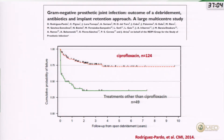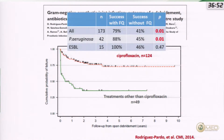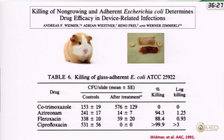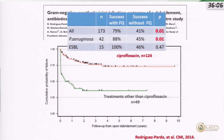When ciprofloxacin could not be used, prognosis fell to around 40 percent — a dramatic difference. Quinolones are very important in bone and joint infection caused by gram-negative bacilli. This applies not only to Enterobacteriaceae but also to Pseudomonas aeruginosa. Even for ESBL producers, 100 percent of those that could be treated with ciprofloxacin were cured. So ciprofloxacin is the key antibiotic for gram-negative infection. The alternatives — beta-lactams and cotrimoxazole — show poor results. Beta-lactams perform badly in the biofilm setting, and cotrimoxazole, while bactericidal and convenient orally, is also problematic.